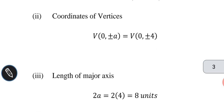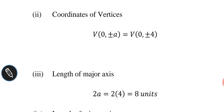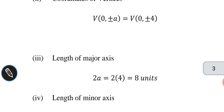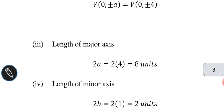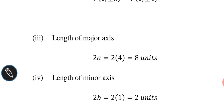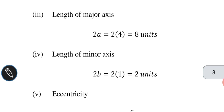The length of the major axis is 2a = 2 × 4 = 8 units. The length of the minor axis is 2b = 2 × 1 = 2 units.